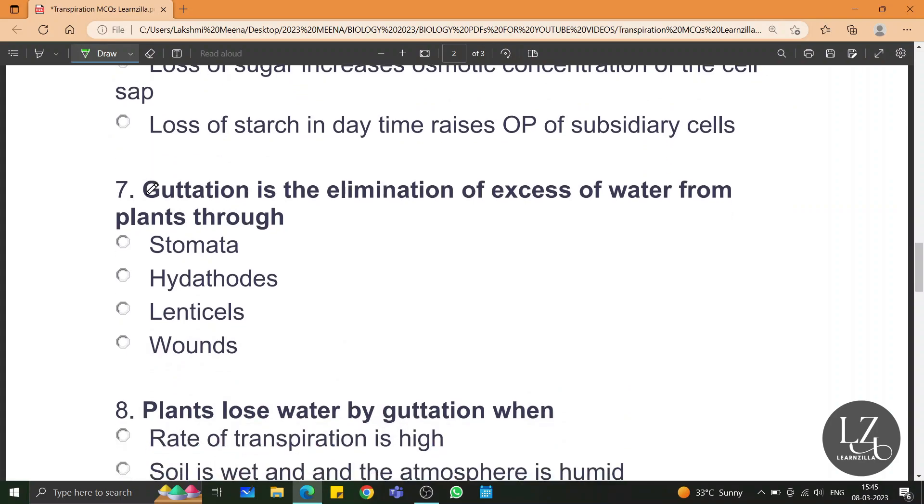Gutation is the elimination of excess water from plants through hydathodes. These are small pores which are present on the margins of the leaves.